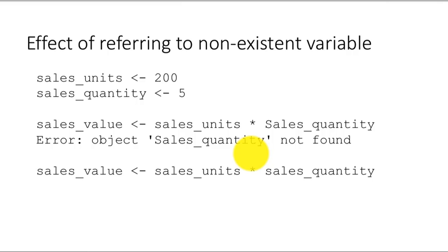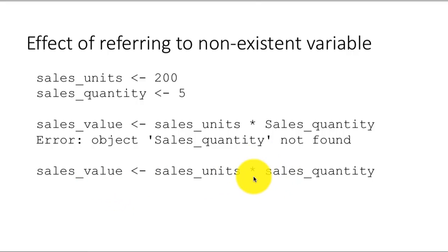So whenever you see an error message, as I have said earlier, try to make sense of what's going on with the error message. Read the error message and try to make sense of it. Sometimes you will not be able to understand the entirety of the error message, but there will definitely be some part of it that you can read and infer what's going on and spot the mistakes. Of course, we can rectify the problem by correctly typing sales_quantity.